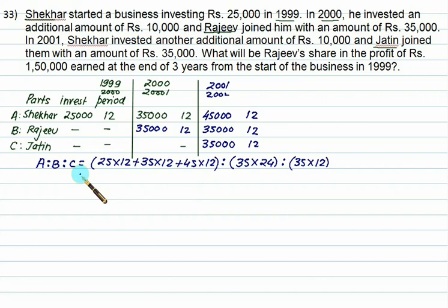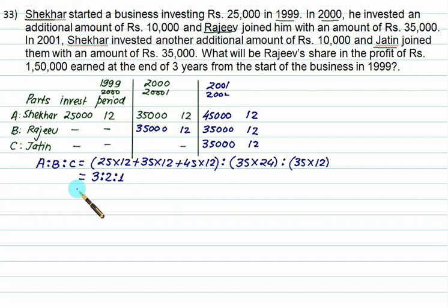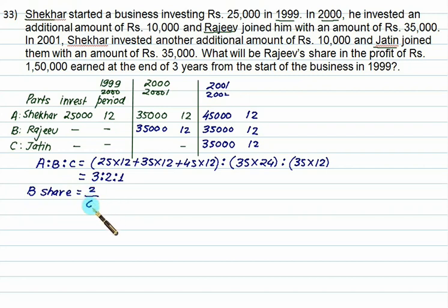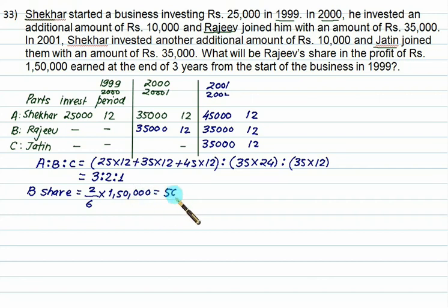Their share ratio is 3:2:1. Raju's share (B) = 2 divided by (3+2+1) = 2/6 multiplied by 1,50,000 = 50,000 rupees.